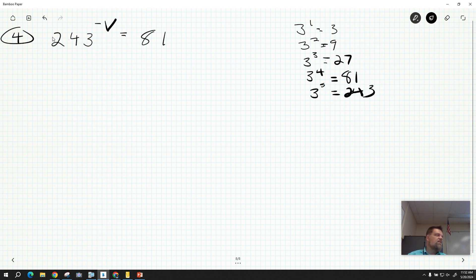So I'm going to rewrite this as 3 to the fifth power raised to the negative v, which is also equal to 81, which is 3 to the fourth power.